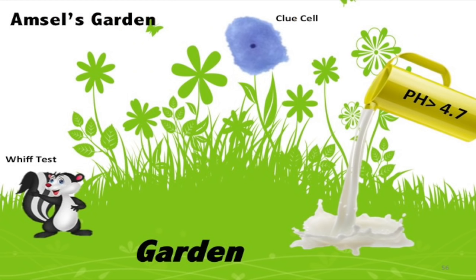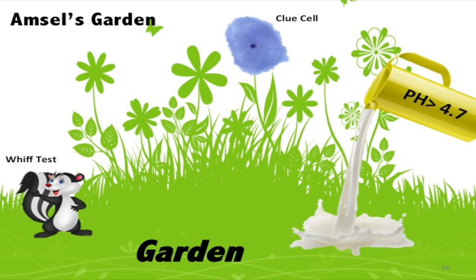Amsel's criteria is for Gardnerella or bacterial vaginosis — four things in the garden: clue cells, positive whiff test (amine off potassium hydroxide from a vaginal smear), pH higher than 4.7, and whitish-gray discharge that adheres to the speculum.